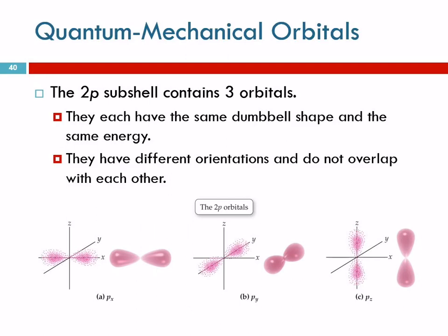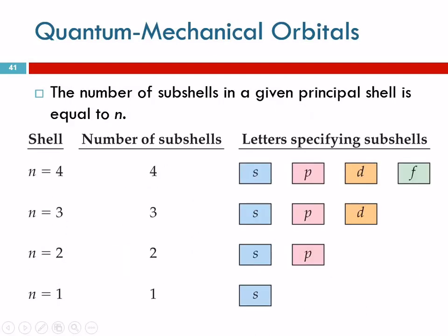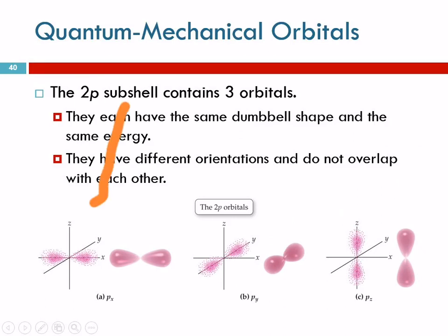The p orbital, then, the p-sub-shell, actually has three different orbitals. They each have the same shape and the same energy, but they have different orientations. And so, here's the dot representation, and here's the shape representation. So, this looks a little more like a standing wave, doesn't it? A little easier to visualize, but this is in three dimensions.